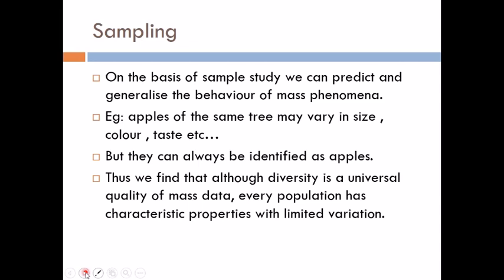Although there is diversity present in a population, every population has characteristic properties within them, and those characteristic properties have only a small variation among them. This is what we found with the apple example. This makes it possible to select a relatively small, unbiased random sample that can portray fairly well the traits of the population.